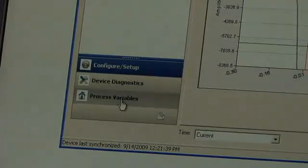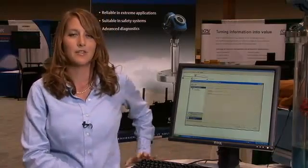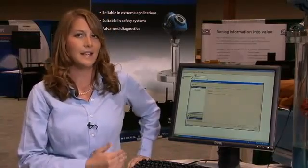Now I'm going to move to another screen here. We've set the secondary variable as the signal quality. The signal quality is a metric that ranges from 1 to 10, with 10 being a great installation with clean and no disturbances.